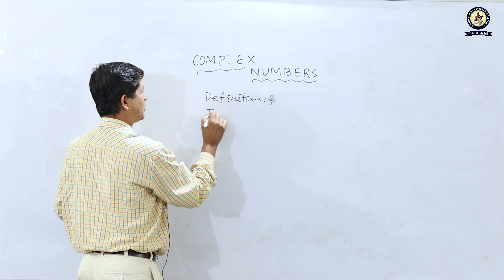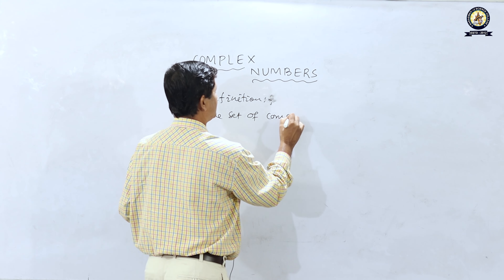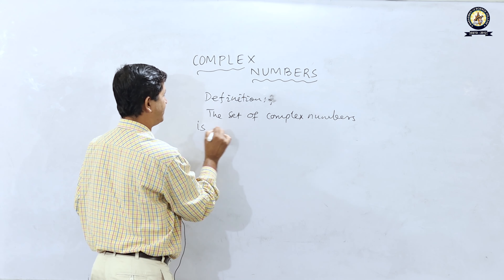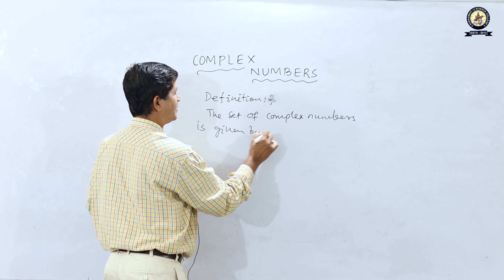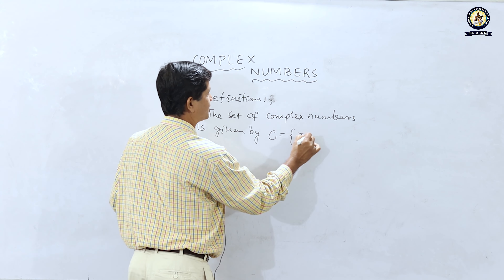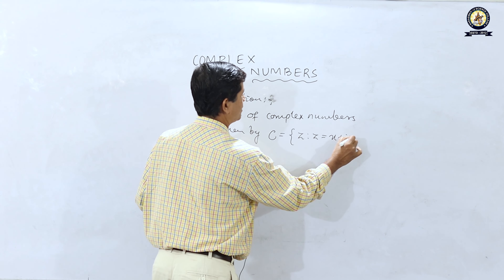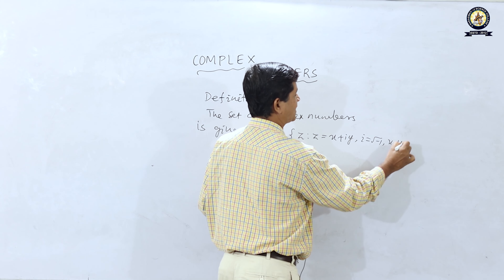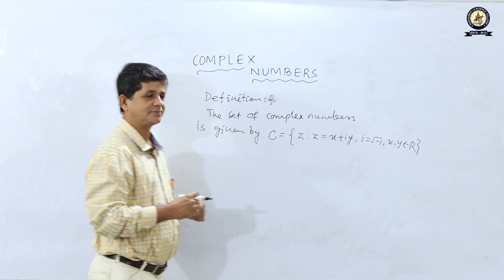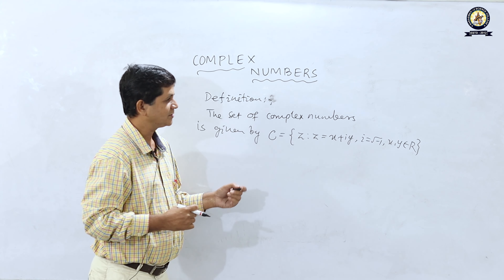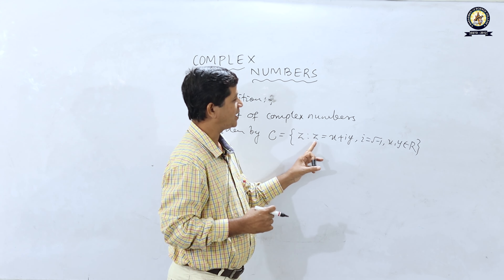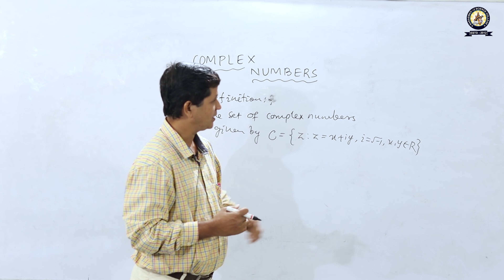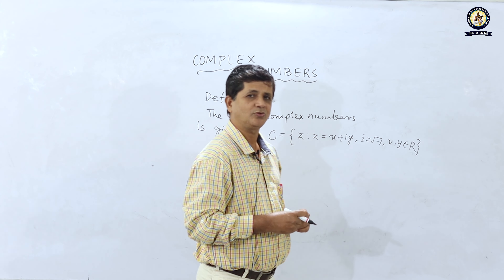The set of complex numbers is given by C equal to z, such that z is equal to x plus i y, where i is equal to root over of minus 1, and x and y are two real numbers.